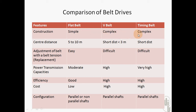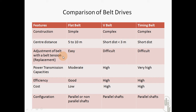The V belt and timing belt have complicated or complex construction. Considering center distance between the shafts, flat belts are used for center distances of about 5 to 10 meters, whereas V belts and timing belts are used for comparatively shorter center distances.